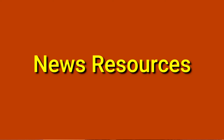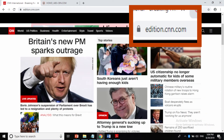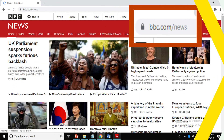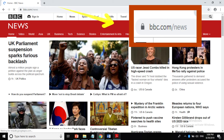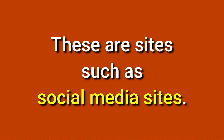Next are news resources. They provide extremely current information on hot topics. They include .com in their URL. And finally, we have personal webpages or resources — these are sites such as social media sites. Reminder: exercise great caution when using information from these. Apart from the fact that fake news and information abound in social media platforms, they do not hold much weight in the scholarly community when used in academic papers.